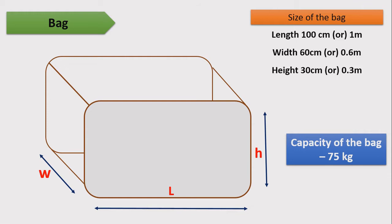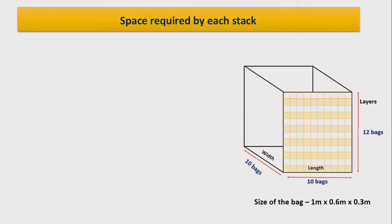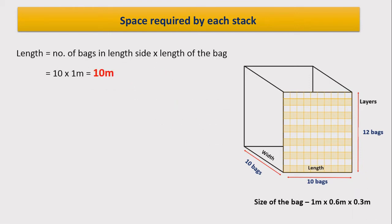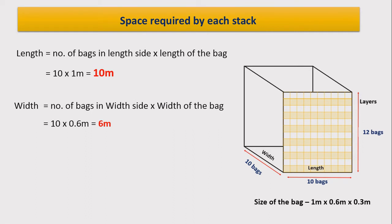As we know the stack size and bag measurements, we need to calculate the space required by each stack — its length, width, and height. Length of the stack is: number of bags on the length side × length of the bag = 10 × 1 = 10 meters. Width of the stack is: 10 × 0.6 = 6 meters. Height of the stack is: number of layers × height of bag = 12 × 0.3 = 3.6 meters.